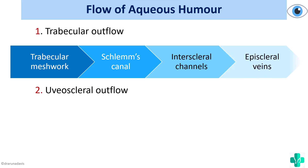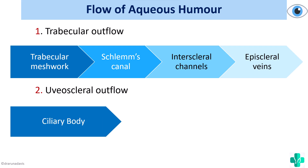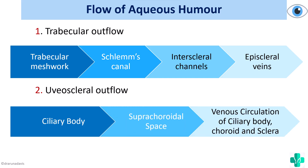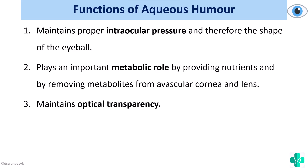The trabecular outflow goes: Schlemm's canal → interscleral channels → episcleral veins. The uveoscleral outflow goes: ciliary body → suprachoroidal space → venous circulation of the ciliary body. The functions of aqueous humor are to maintain proper intraocular pressure and the shape of the eyeball, to provide metabolic support by supplying nutrients and removing metabolites from the avascular cornea and lens, and to maintain optical transparency.